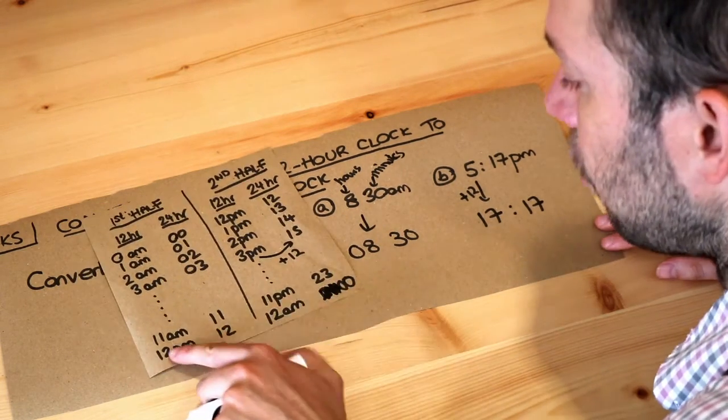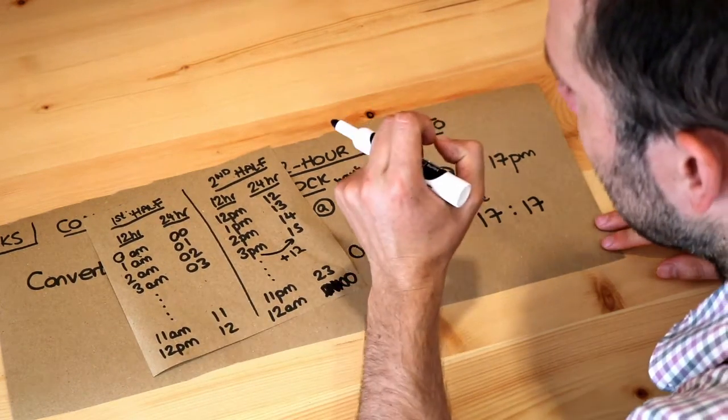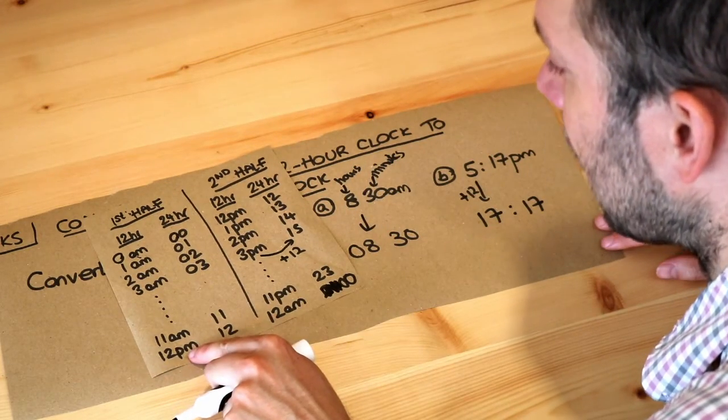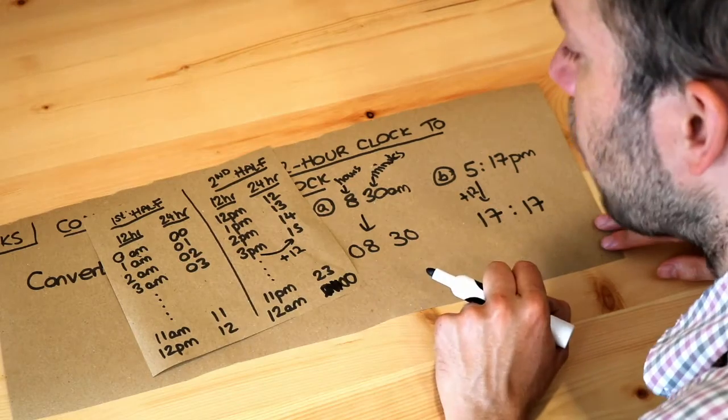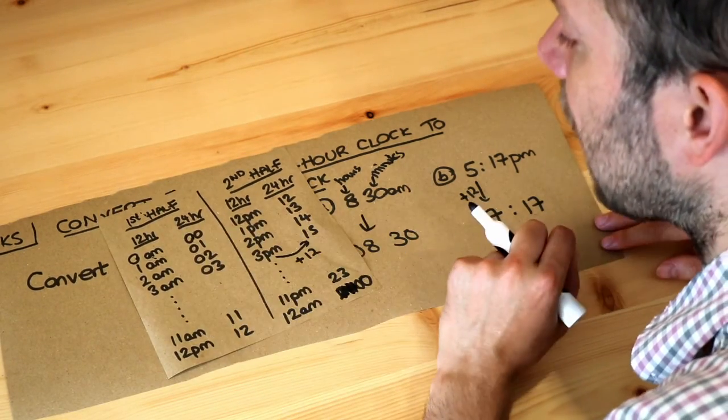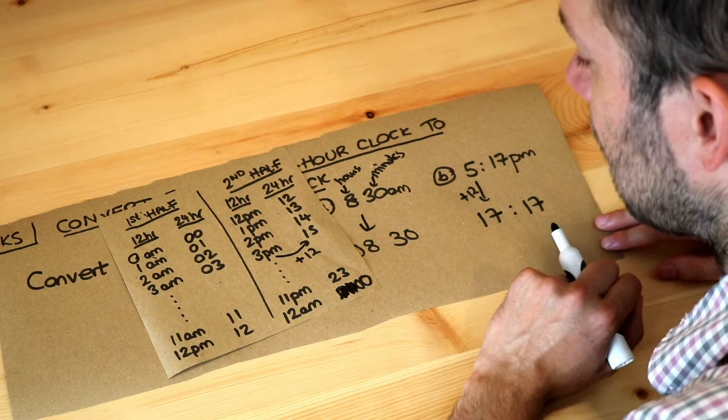Just one final note: if it's noon, you might wonder, does noon count as AM or PM? We could count noon as PM, so in the second half of the day. Whereas midnight, 00:00 on the 24-hour clock, that counts as AM, so the first half of the day.